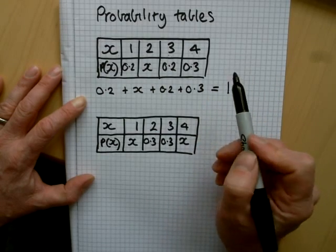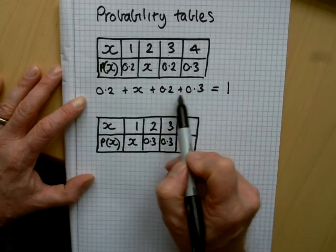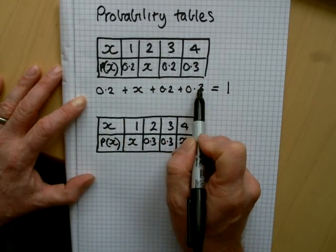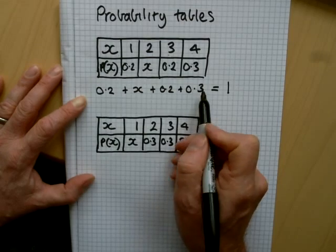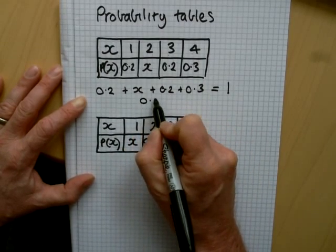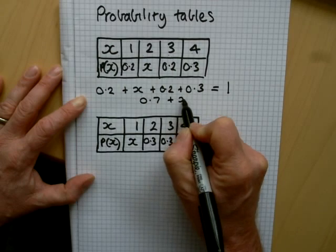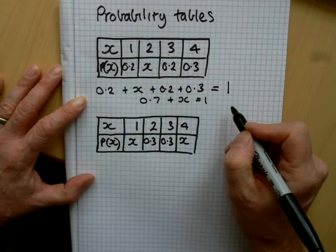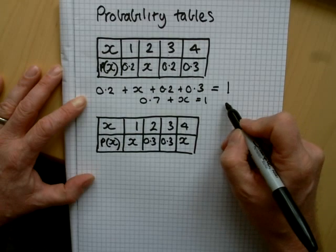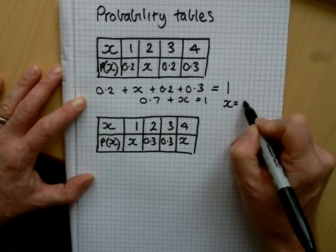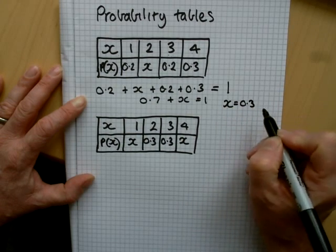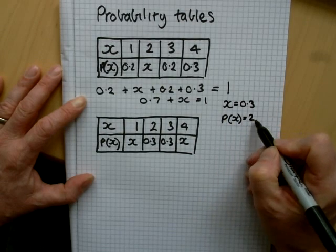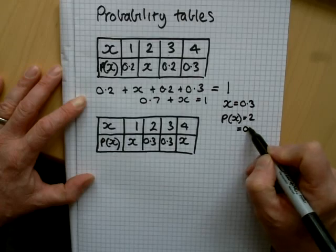We can add up the decimals on the left-hand side of our equation: 0.2, 0.2, and 0.3. That's just like adding 2, 2, and 3 with a decimal point in front. So we get 0.7 plus x equals 1. We do 1 subtract 0.7, and the answer is 0.3. So the probability that x equals 2 is 0.3.